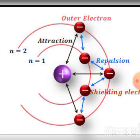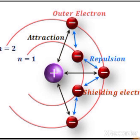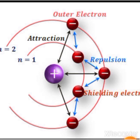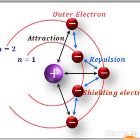S electrons, p electrons, d electrons, and f electrons all differ in their shielding ability. For gallium, indium, and thallium — which have higher atomic numbers — the electronic configuration includes d orbitals and f orbitals. The shielding effect from these orbitals is poor, which is the poor shielding effect.